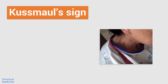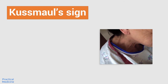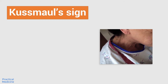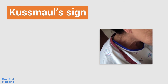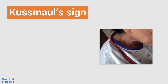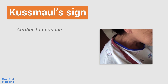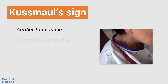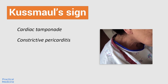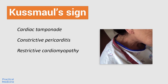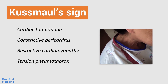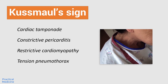Causes of Kussmaul's sign include all those conditions which restrict extra blood returning during inspiration from being accommodated in the right heart. These conditions include cardiac tamponade, constrictive pericarditis, restrictive cardiomyopathy, tension pneumothorax, and others.